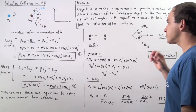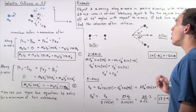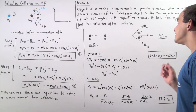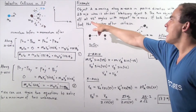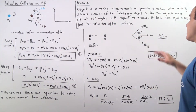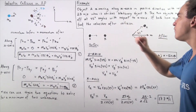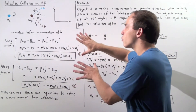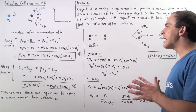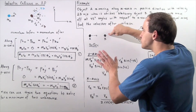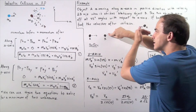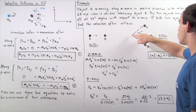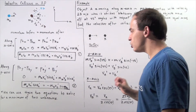For the example: object A moves along the positive X axis at 25 meters per second and strikes stationary object B. The two objects move off at 45 degree angles with respect to the X axis. Both objects have equal mass. We want to find the velocities of the two objects after the collision using our two conservation of momentum equations.